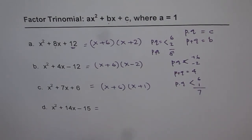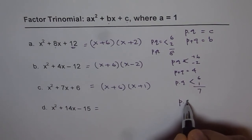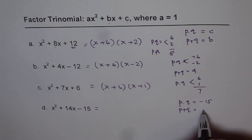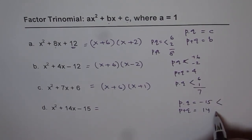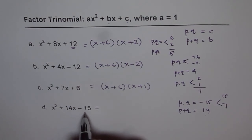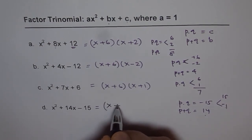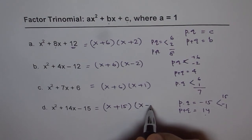Now this one we are looking for product of minus 15. So p·q equals minus 15 and p + q is 14 for us. So the two numbers should be 15 and 1, of which 15 should be positive and 1 should be negative. When you add them you get plus 14. When you multiply them you get minus 15. So we get here (x + 15)(x - 1).